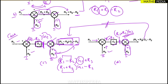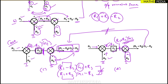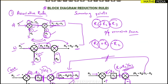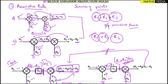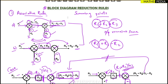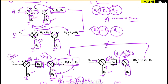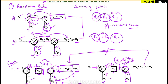Comparing the two outputs: case C gives (R1 minus R2) times G1 plus R3, while case D gives (R1 plus R3) times G1 minus R2. These are not equal — G1 is multiplied by different terms. Therefore, the associative law is applicable only when there is no gain block or transfer function between the two summing points. If a block exists between them, changing their positions will change the output.